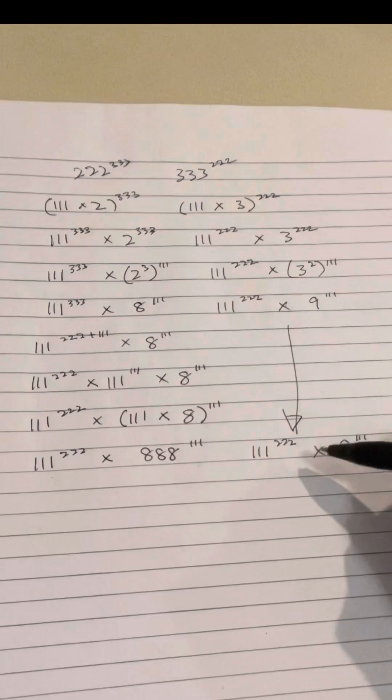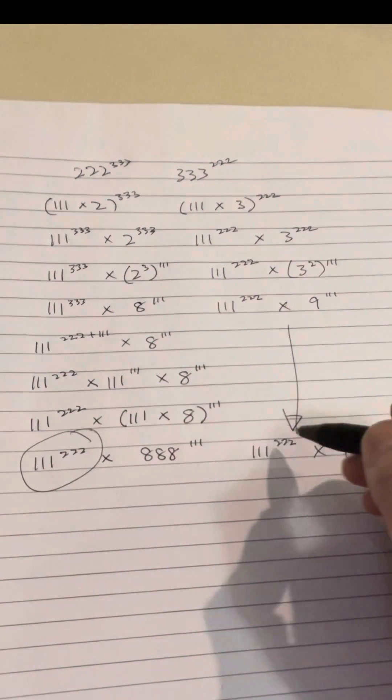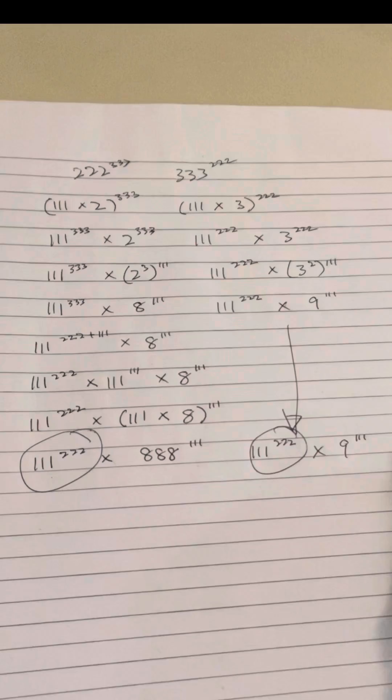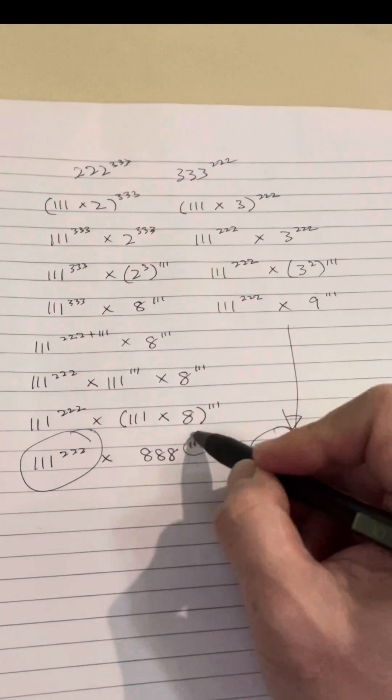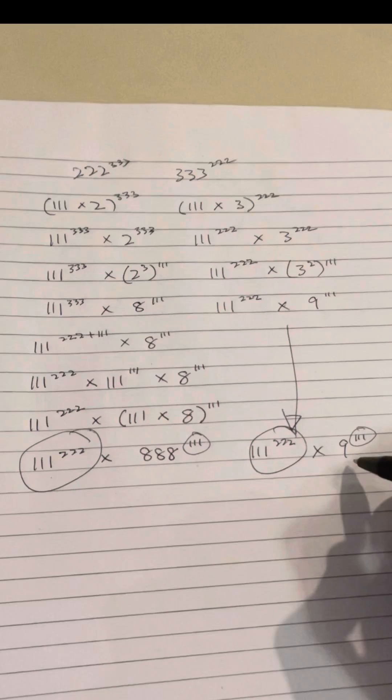And so we arrive at this. And from here, you can see that 111 to the power of 222 is the same on both sides. The power, the exponent on both sides of the second term is the same.